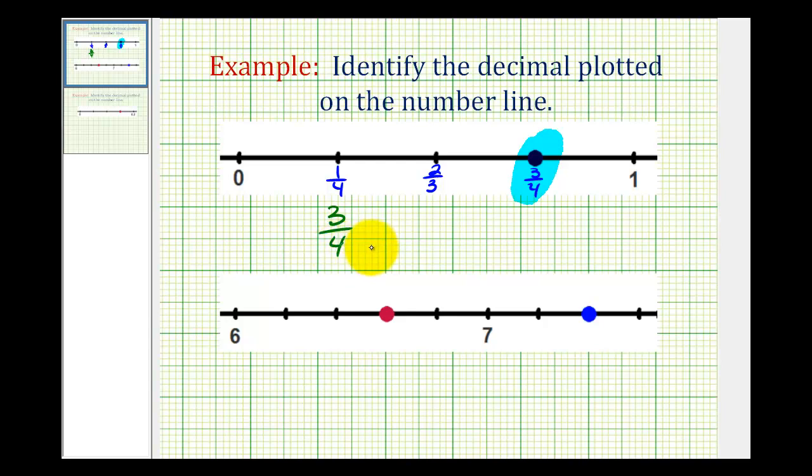And since four times twenty-five is equal to a hundred, if we multiply the denominator by twenty-five and the numerator by twenty-five, we'll have an equivalent fraction. So this is equivalent to seventy-five hundredths. If we know our place values, we can rewrite this as a decimal as zero-point-seven-five. This would be seventy-five hundredths.